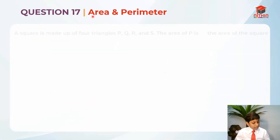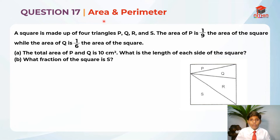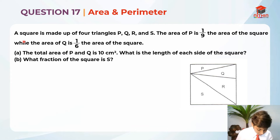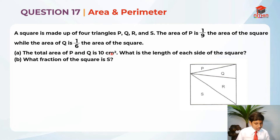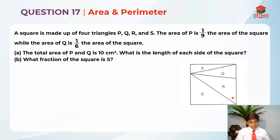So this is question 17. It is testing us on area and perimeter, and it has two parts to solve it. I am going to do Part A right now. A square is made up of four triangles P, Q, R and S. The area of P is 1/9 the area of the square, while the area of Q is 1/6 the area of the square. The total area of P and Q is 10 cm². What is the length of each side of the square?